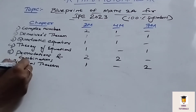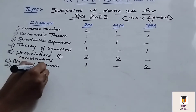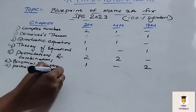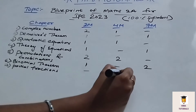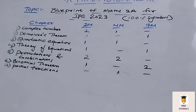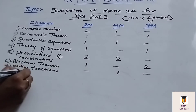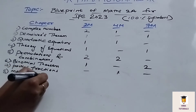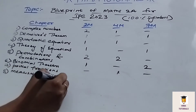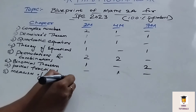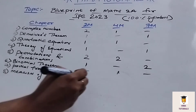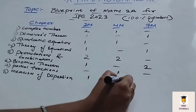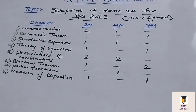Coming to the next chapter, Partial Fractions. In Partial Fractions, we will get 1 four-mark question. Coming to the next chapter, Measures of Dispersion — in Measures of Dispersion, we will get 1 two-mark question and 1 seven-mark question.